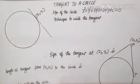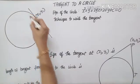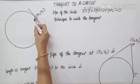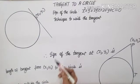Good morning children. In today's class we are going to learn about tangent to a circle. What do you mean by the word tangent? A line that touches the circle at only one point is called a tangent.